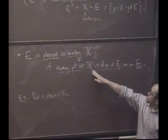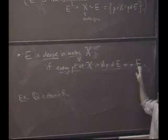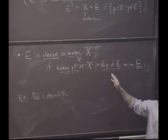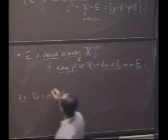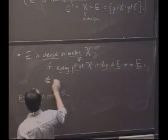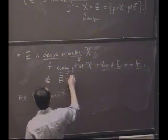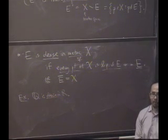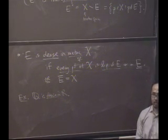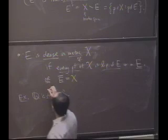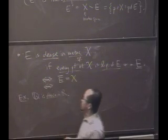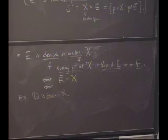But here's another definition. So another way to say this is, if every point of X is a limit point of E or in E, what's it mean to be in E or a limit point of E? In the closure. So another way to say it is, if E closure is X. Would you agree with that? That's equivalent. Or, I'll make this a biconditional because you can show that.